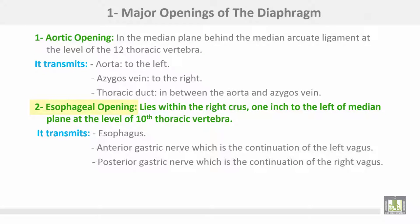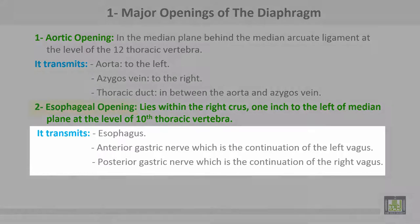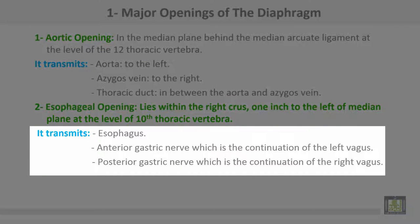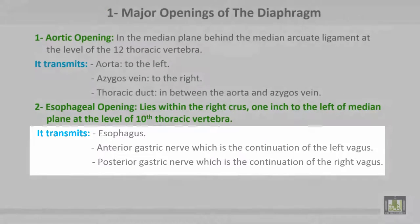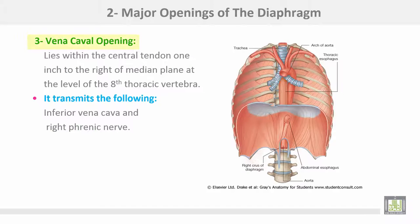Number two: the esophageal opening lies within the right crus, one inch to the left of the median plane at the level of the 10th thoracic vertebra. It transmits the esophagus, the anterior gastric nerve (continuation of the left vagus), and the posterior gastric nerve (continuation of the right vagus).